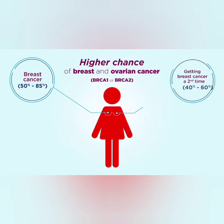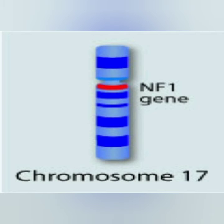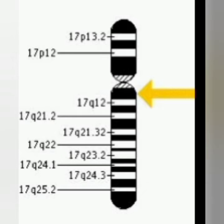Another tumor suppressor gene is the NF1 gene. NF1 codes for neurofibromin, and mutations on this gene are responsible for causing neurofibromatosis, which is one of the best examples of an autosomal dominant condition. Here, RAS protein acts as a negative regulator.